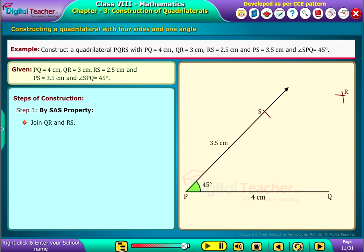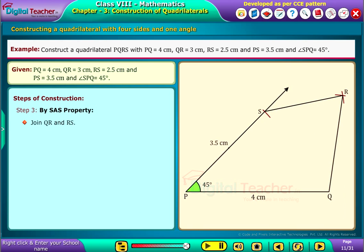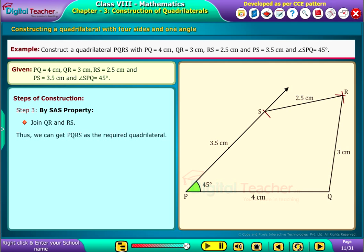Join QR and RS. Thus, we can get PQRS as the required quadrilateral. Now, let us solve one more example of the same type.